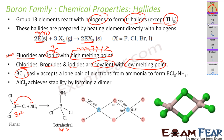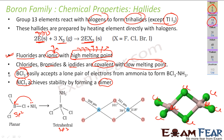Aluminum chloride achieves a dimer shape. If you see the structure, there are two aluminum chloride molecules. This is the aluminum, and the green ones are chlorine. This is a 3D structure. We will discuss more about aluminum chloride and boron chloride in the next two slides.